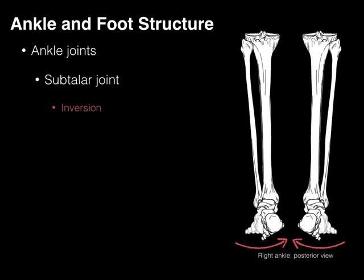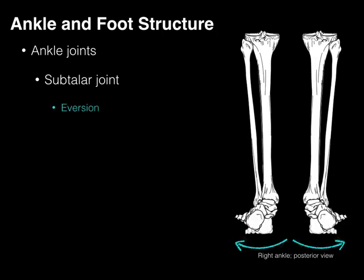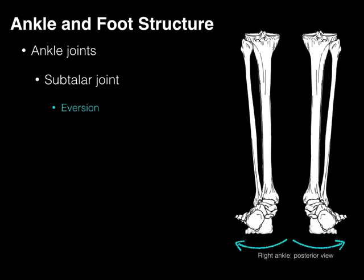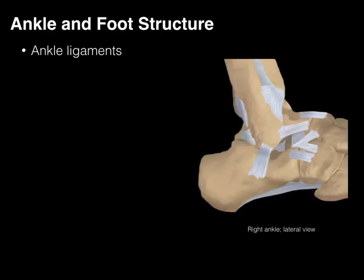First, for inversion, which allows the plantar surface of the foot to face medially, and eversion, which is the plantar surface of the foot facing laterally as if towards the wall. The primary muscles that point the plantar surface of the foot medially are tibialis anterior and tibialis posterior. The principal muscles that evert the subtalar joint are your lateral compartment leg muscles like peroneus longus and peroneus brevis.